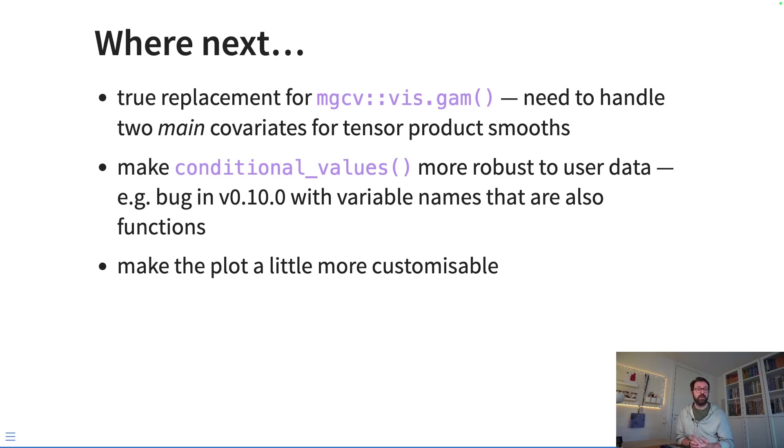So rather than mapping the fitted values to the y-axis, we might map another variable, another covariate, to the y-axis, and then we'll want to represent a surface. And this is useful for things like the tensor product smooth where we're modeling smooth interactions between variables. We also want to make conditional_values more robust to user data—for example, there's a bug in the version on CRAN at the moment where with variable names that are also function names, then you'll get an error because it picks up the function rather than the variable first.